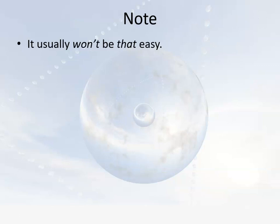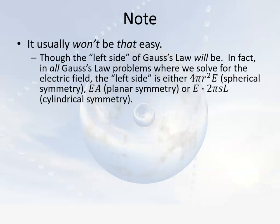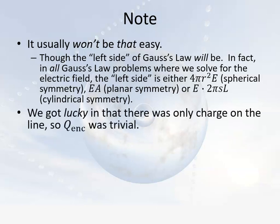Keep in mind it's not always going to be this easy, though the left side of Gauss's Law always will be. For spherical symmetry, the left side is always 4πr²E. For planar symmetry, it's always EA. For cylindrical symmetry like what we just had, it's always 2πsLE — where the L's are going to cancel and E is what we're usually solving for. We got lucky here because there was only charge on a line, so the enclosed charge lambda·L was trivial.